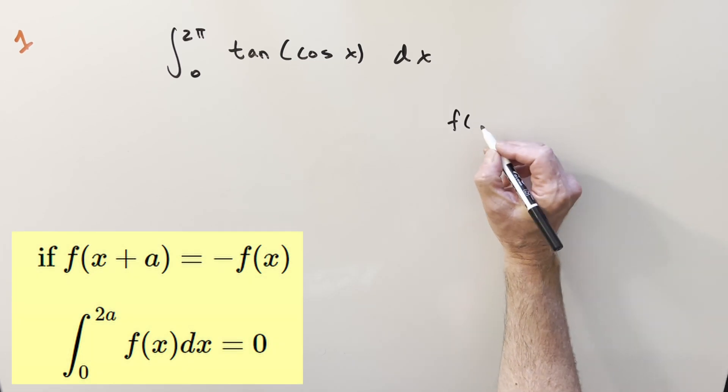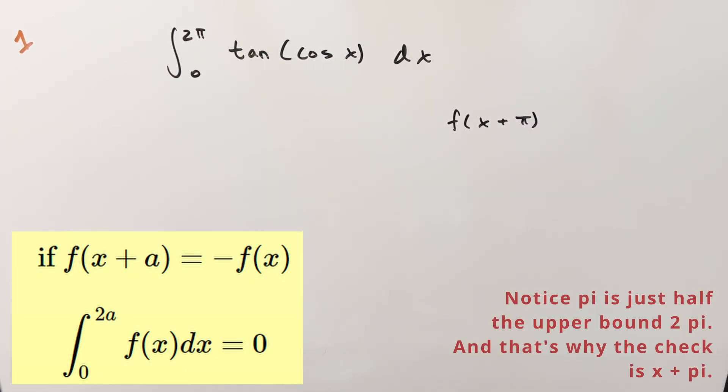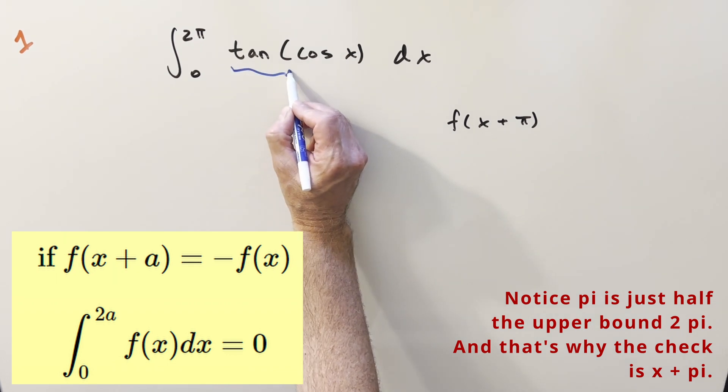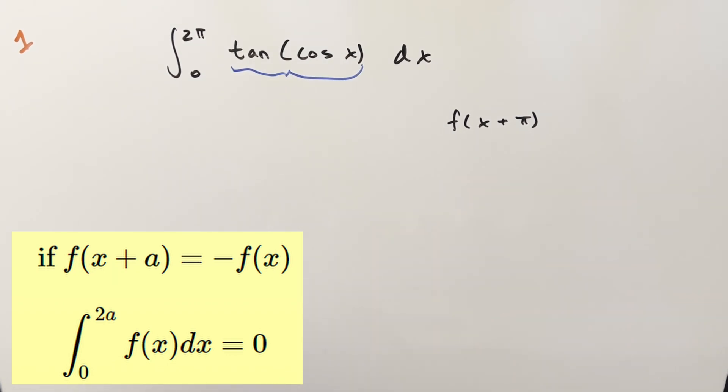I want to do this check for f of x plus pi on this. We'll be calling the whole integral here, this will all be our f of x, and if we can get this check to work where this is going to be minus f of x, then the whole integral is going to be zero.